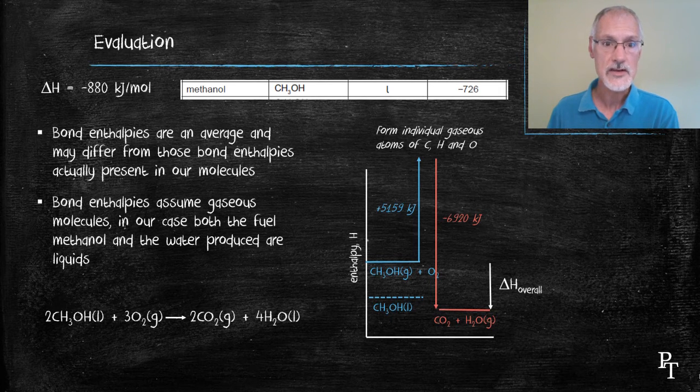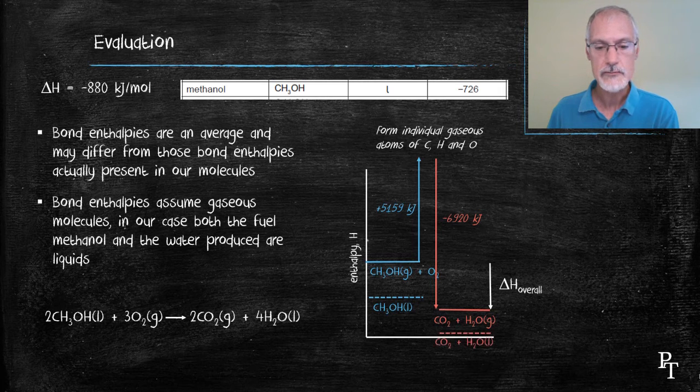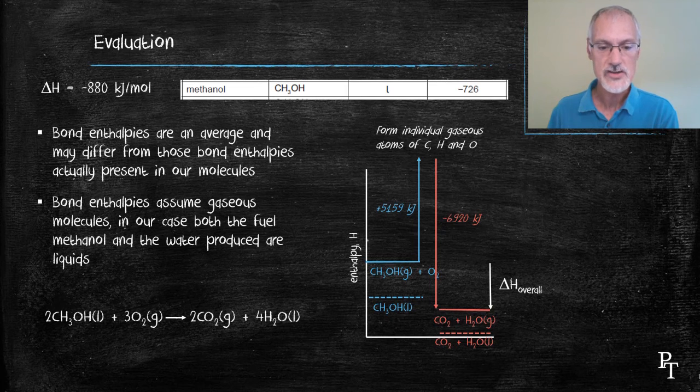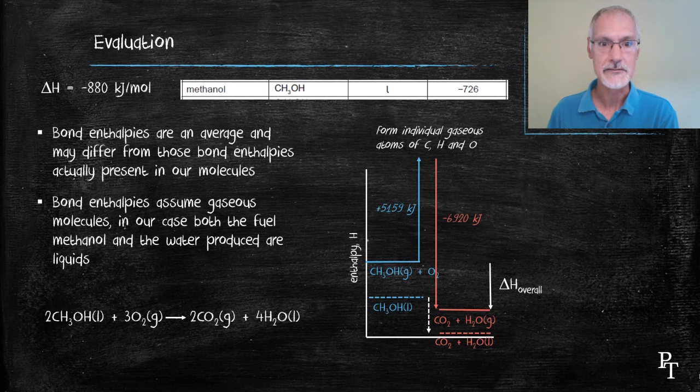And I finish with H2O liquid and that too would be a slightly lower point than the H2O gas that I have calculated. The enthalpy change then would actually be that distance that's shown there by the white dashed line. So that's perhaps another reason why my answers differ.